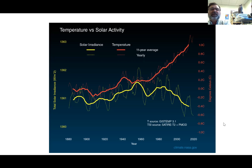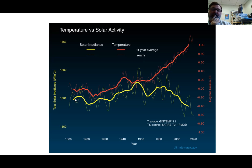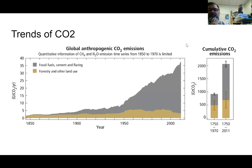On solar activity: you can reconstruct solar radiance from visual and historical records and see that it goes up and down in cycles. But you can see the disconnect — solar radiance has actually gone down while temperature has actually gone up.